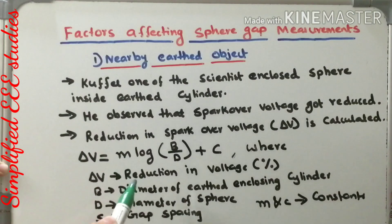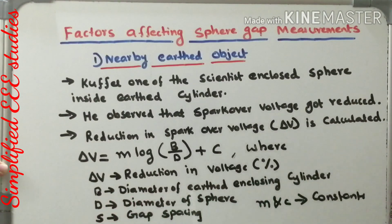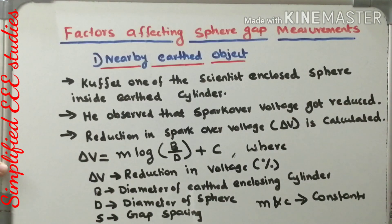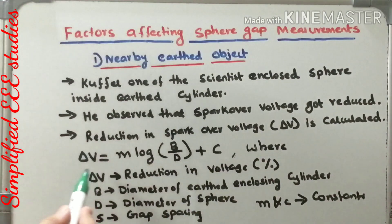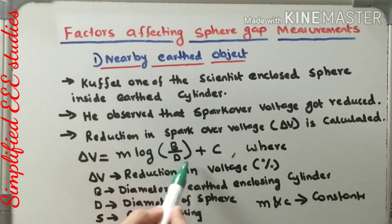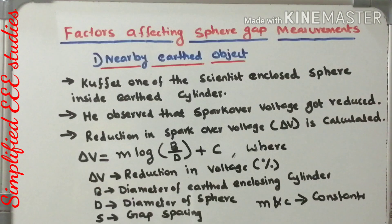In this equation, Delta V is the overall reduction in voltage in terms of percentage. B is the diameter of the earthed enclosing cylinder, and D is the diameter of the sphere. S is the Gap Spacing. M and C are constants that depend on the given circumstances. So the equation Delta V = M·log(B/D) + C is mainly used for computing the percentage of reduction in spark over voltage in the presence of a nearby Earth Object.